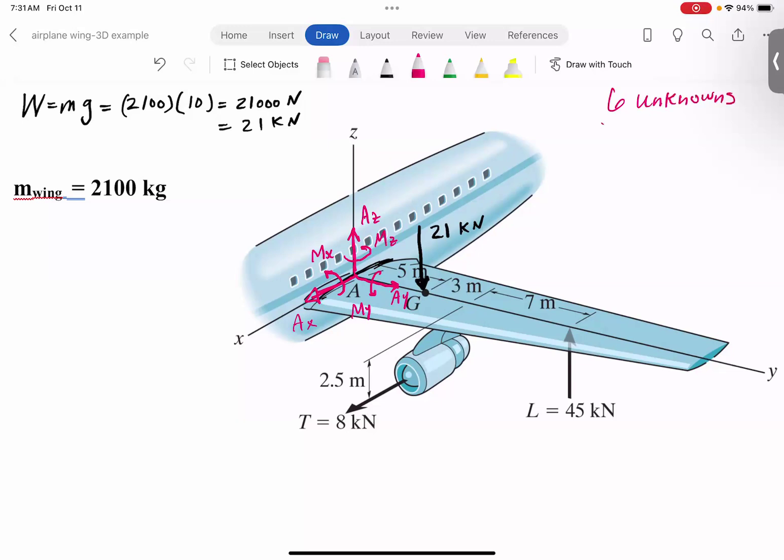Our objective is to find these unknowns, right? And we have six equations. Our equations, we can balance forces in the X, Y, and Z, right? So those are our equations. We'll guarantee that there's no translation of the body.